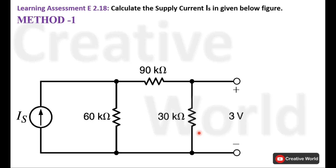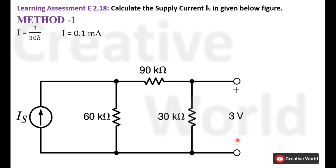The voltage across this 30 kΩ resistance is given, and the value of resistance is also known, so we can calculate the current through it. The current for the 30 kΩ resistance will be voltage divided by resistance, and the current value is 0.1 milliampere. This current flows in a clockwise direction because of the sign notation of the voltage — the current entering terminal is taken with positive sign and leaving terminal with negative sign.